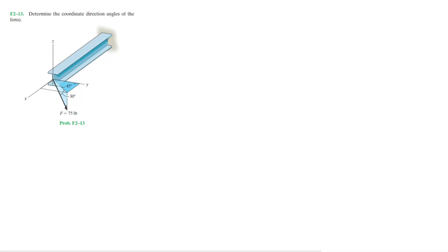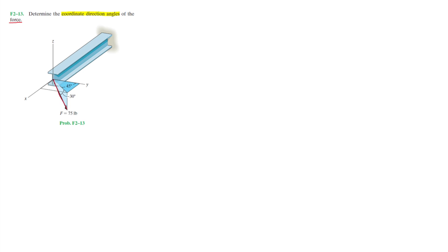Fundamental problem F2-13 from the R.C. Hibbeler Engineering Mechanics Statics book says determine the coordinate direction angles of the force. As you can see in the diagram here, we have some kind of I-beam with an angled force at the left end of 75 pounds, which is the force we want to find its coordinate direction angles. I'm going to retrace this force vector in red just so we can distinguish it more clearly. Note that this force vector has a magnitude of 75 pounds.